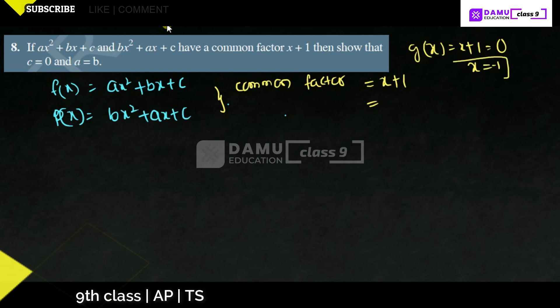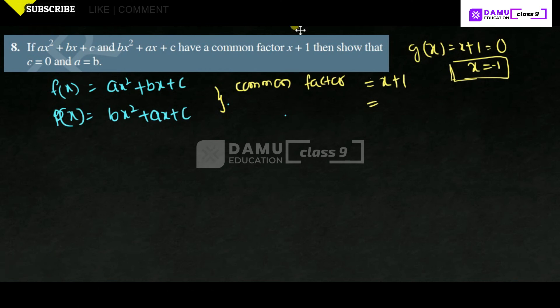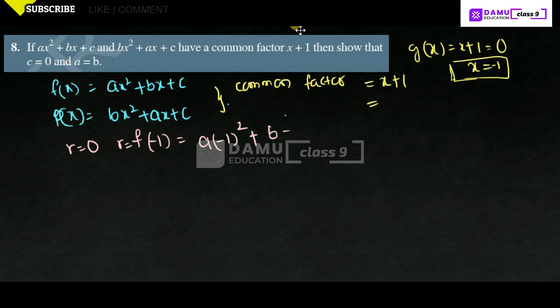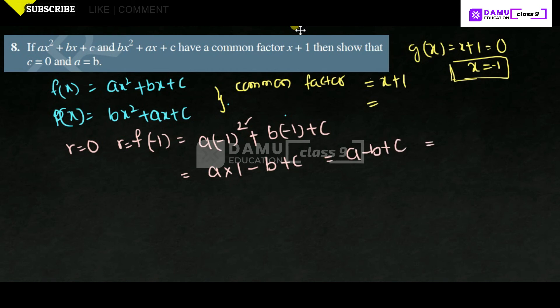According to the factor theorem, if we substitute the x value after equating the common factor to zero: x + 1 = 0 gives x = -1. This value x = -1 we substitute into both equations, and the remainder should be 0. So the remainder equals f(-1) = a(-1)² + b(-1) + c = a - b + c = 0. This is equation 1.